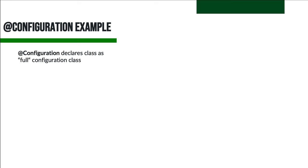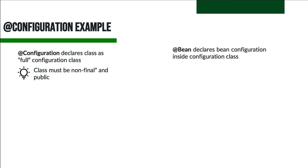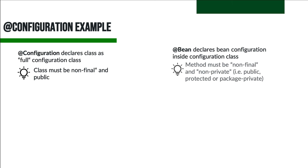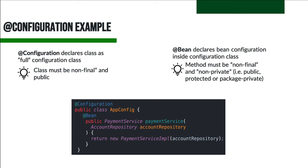To configure a bean, we can use the @Configuration annotation, which declares a class as a full configuration class — the class must be non-final and public. We can also use the @Bean annotation, which declares a bean configuration inside a configuration class — the method must be non-final and non-private. For example, we have an AppConfig class annotated with @Configuration, and inside it a paymentService method with @Bean, returning a new PaymentServiceImpl with an AccountRepository dependency passed in.